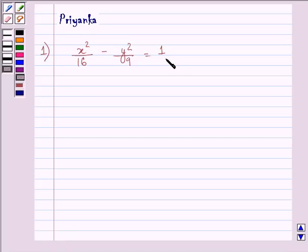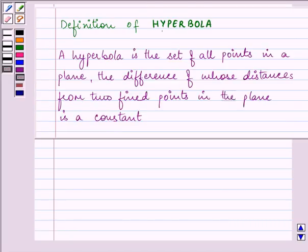Before proceeding on with the solution, we should be well versed with what a hyperbola is all about. A hyperbola is the set of all points in a plane, the difference of whose distances from two fixed points in the plane is a constant.